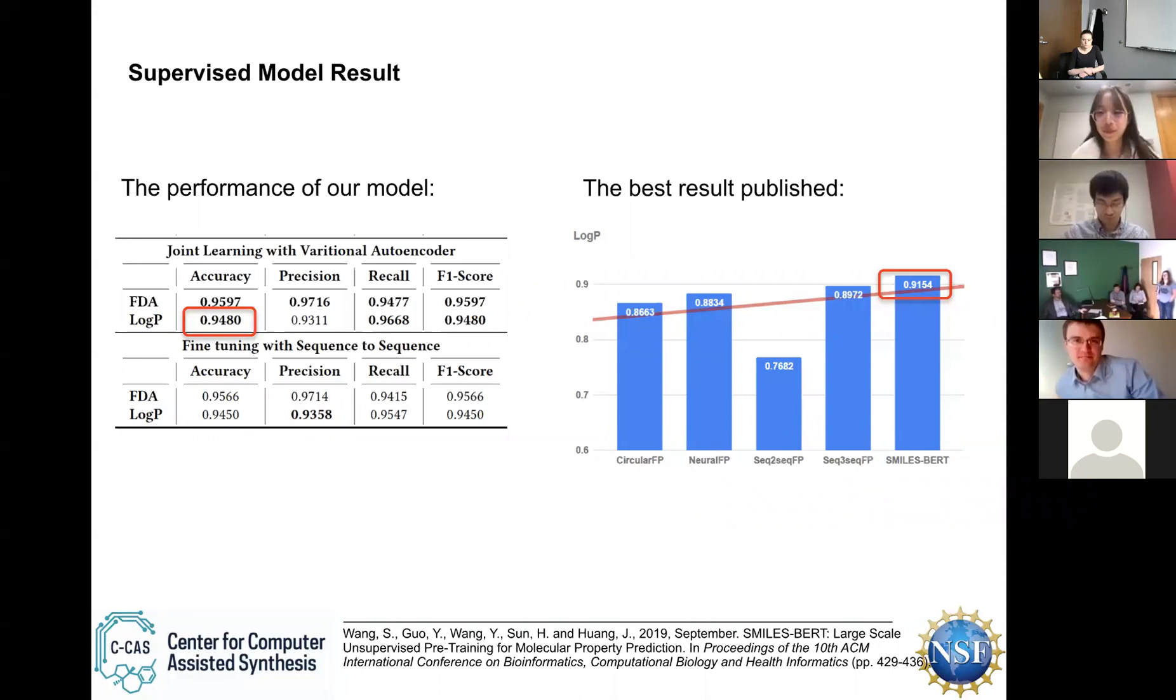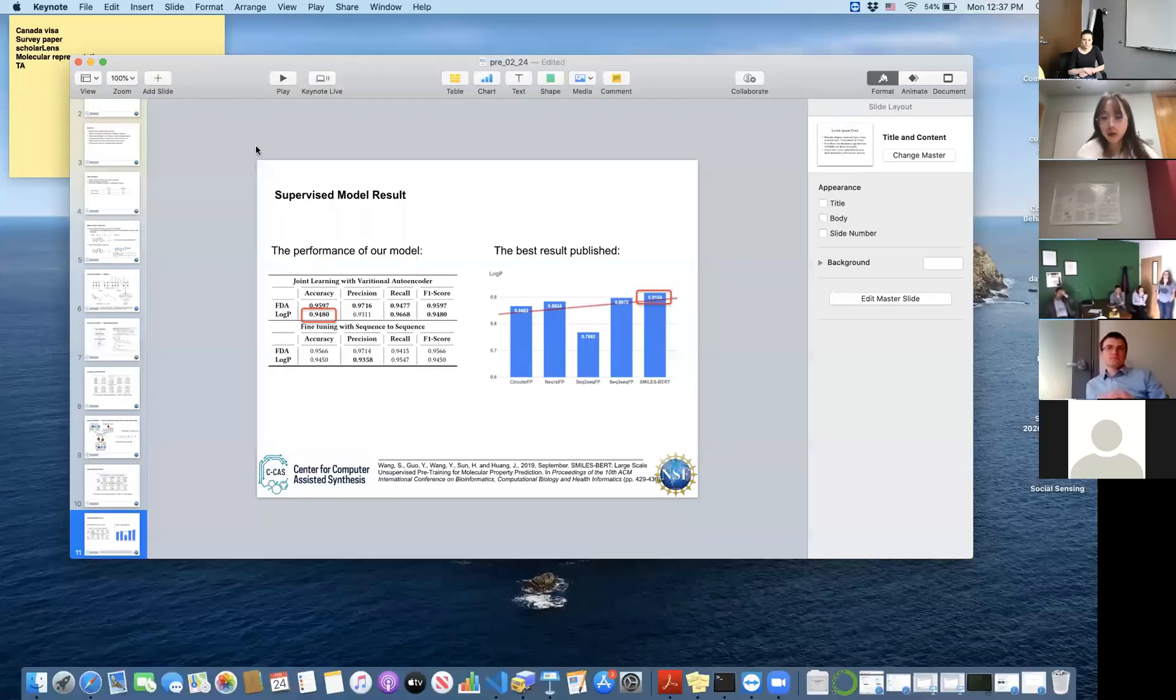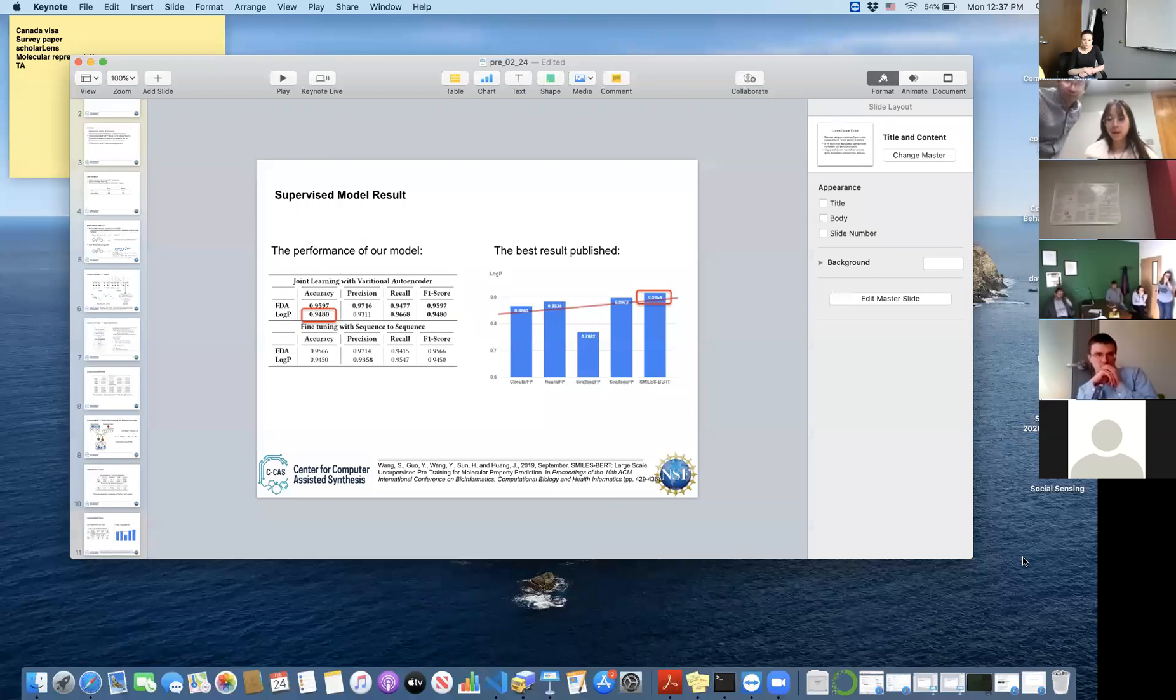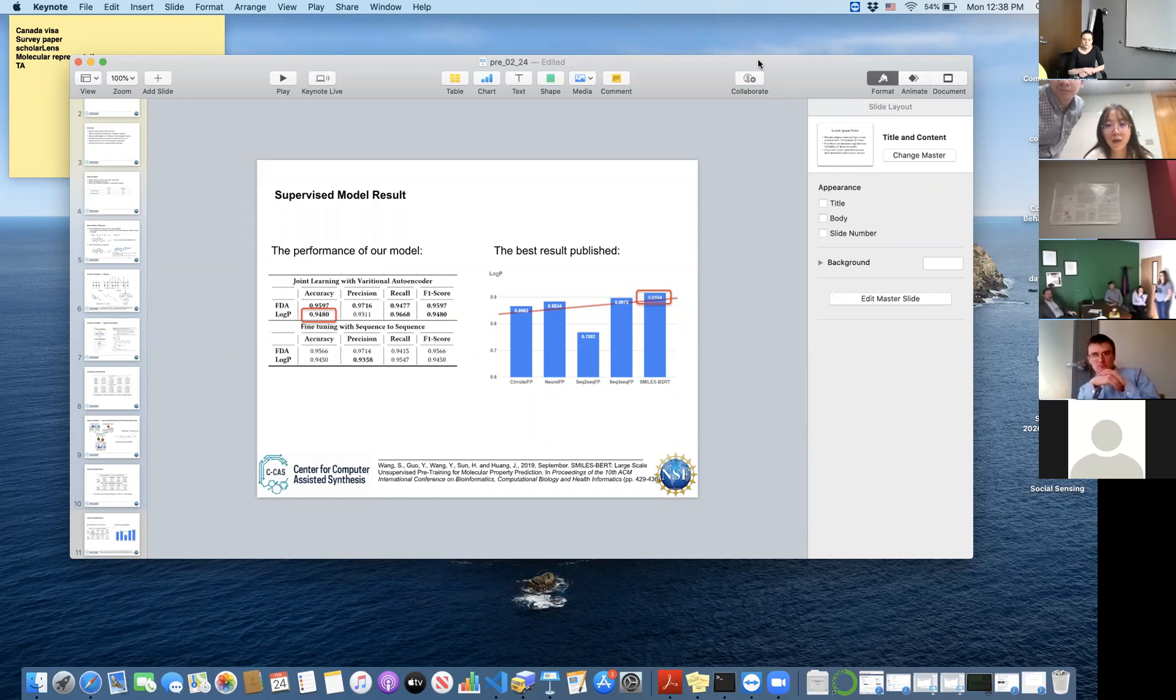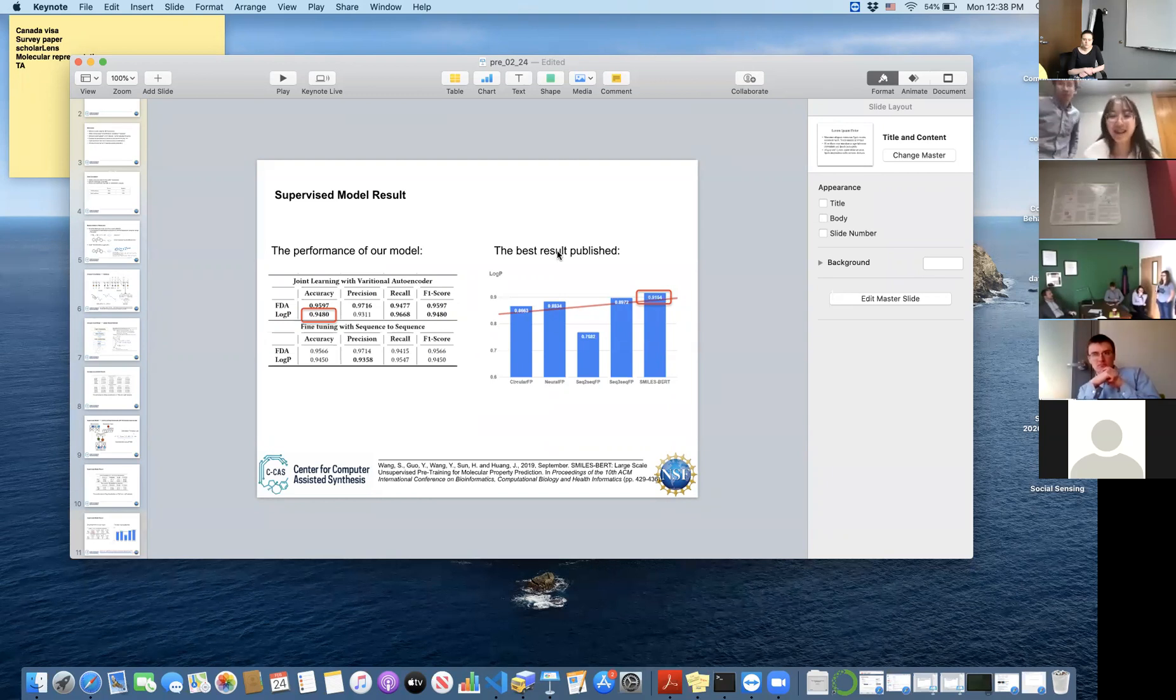So where can we get the experimental data? I think Rob posted a few things on the chat for the group. So the Delaney data set that he's mentioning is one that is actually experimental.